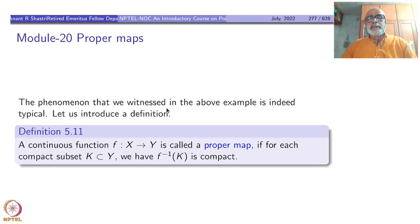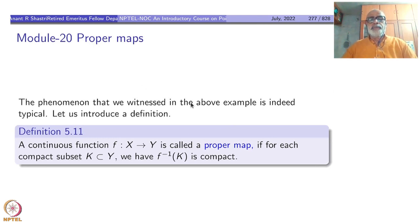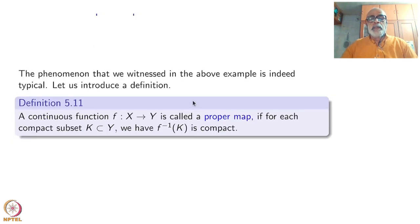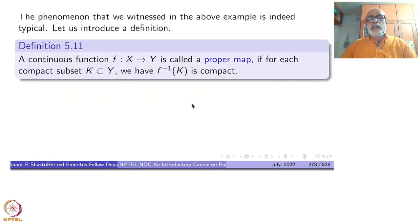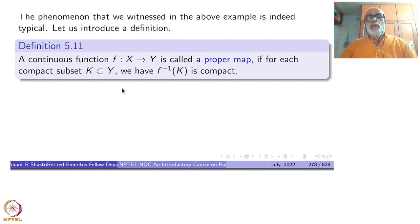The phenomenon that we witness in the above example is indeed typical, so let us introduce a definition. A continuous function f from X to Y is called proper if for each compact subset K of Y, we have f-inverse of K is compact.